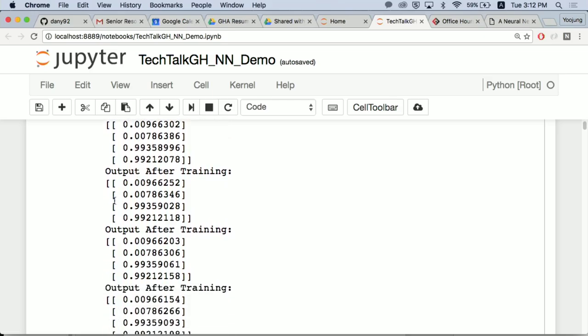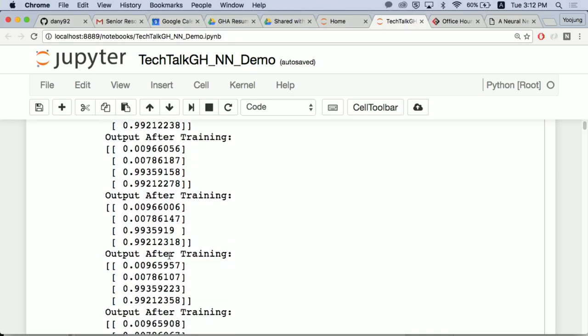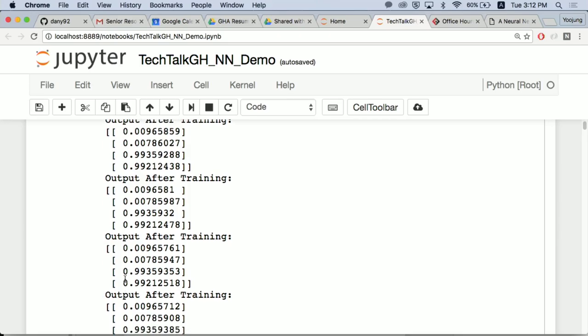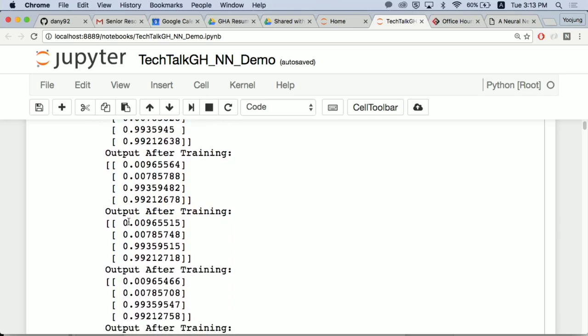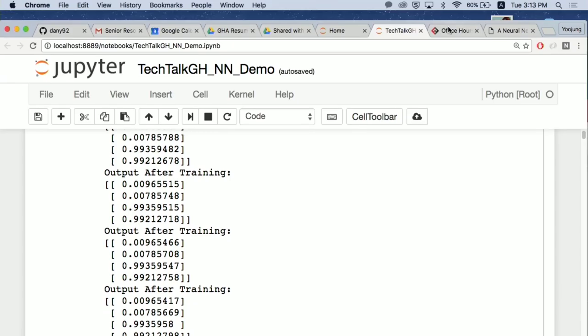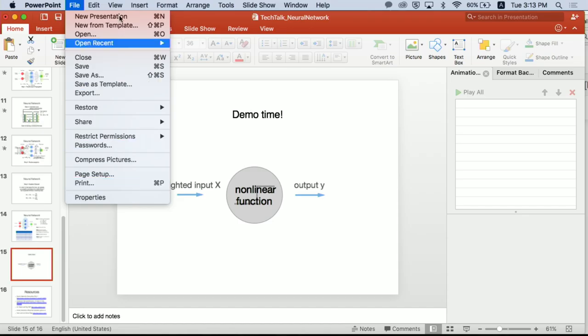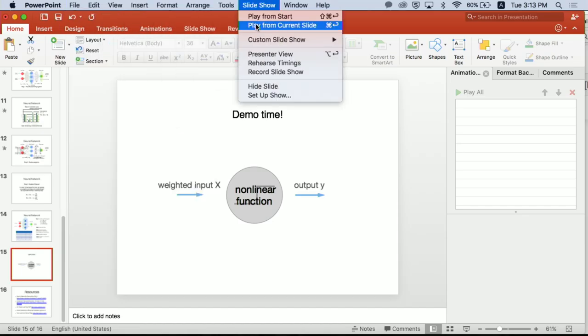Since the weights are initialized randomly, the guess is all over the place at first. But basically what happens is that each iteration is going to keep making corrections until it's going to be as close as possible. Since there are only four data sets, which is very, very small, you wouldn't do this for actual training on neural networks. If you have thousands of datasets, basically what it's going to do is after each iteration, the answer is going to keep getting better and better and better, approaching 0 and 1.